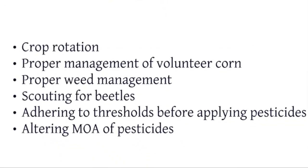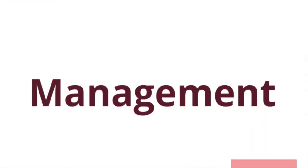These strategies for insect resistance management are really not separate from a proper integrated pest management program. A good IPM program for corn rootworm will include crop rotation — again, eliminating the host plant, corn, will dramatically decrease their populations because they can't survive without corn roots. Proper management of volunteer corn is important too, because even if you've rotated to another crop, beetles will survive in fields with a lot of volunteer corn. Another strategy is proper management of weeds in the vicinity of fields, because these beetles have several grassy weeds they can survive on. Scouting for beetles to assess if there is a corn rootworm problem, adhering to thresholds before applying pesticides, and using insecticides with different modes of action are also important strategies of good IPM.